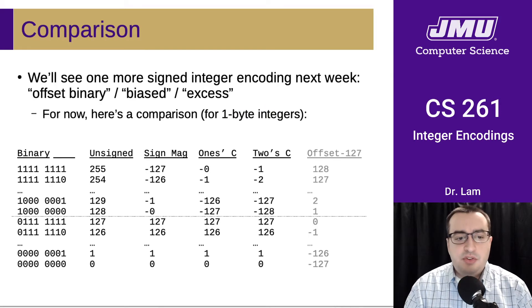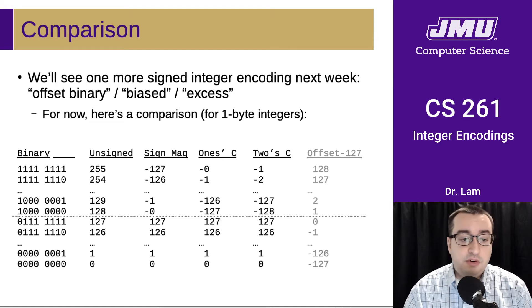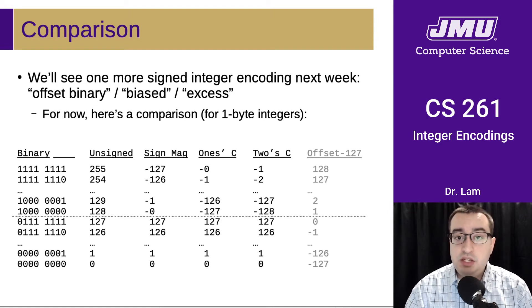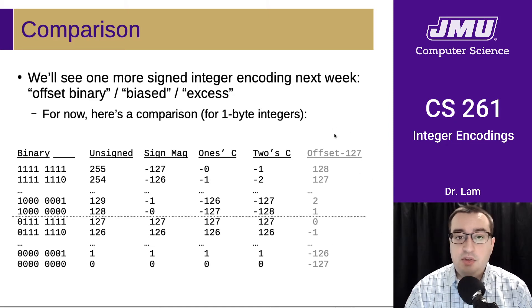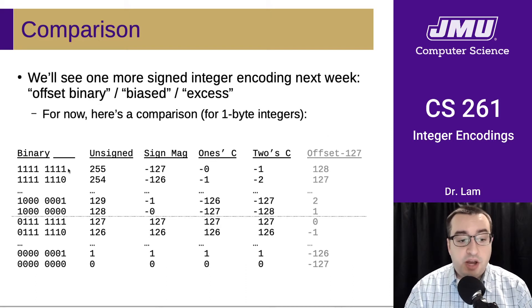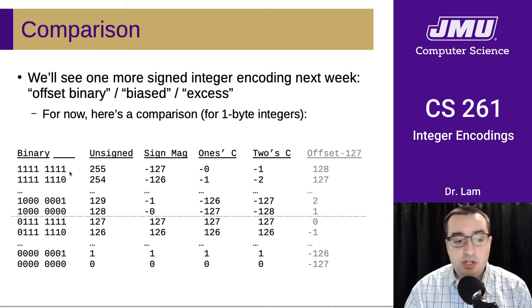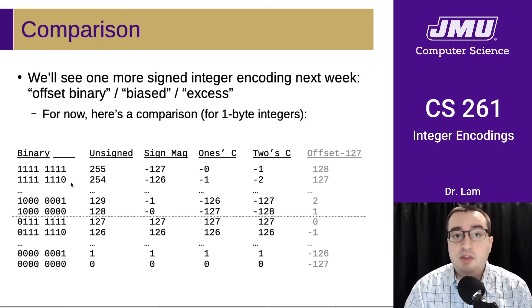Here is an overview and comparison of these different formats. We are going to see one more signed integer encoding next week, and I've put that off to the right here in gray. That's called an offset or biased encoding. These are the binary values from zero up to the highest value — I've cut out some of the range, but these are the important points on the number line.